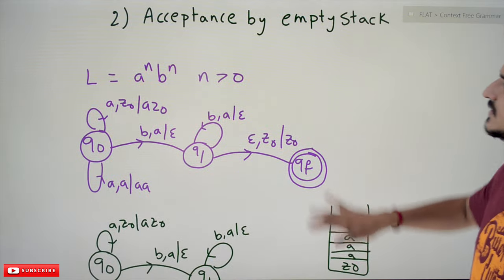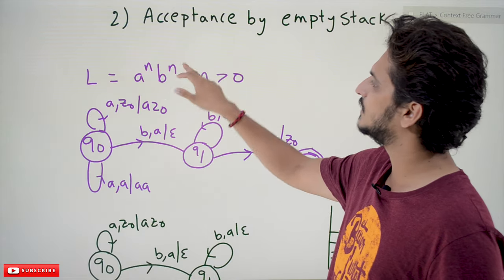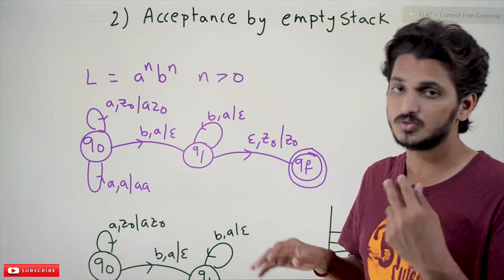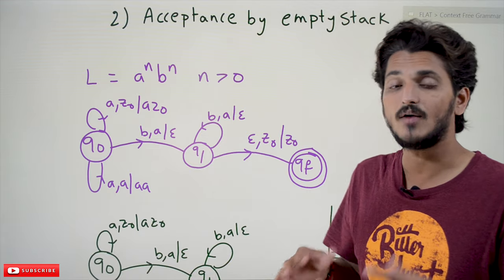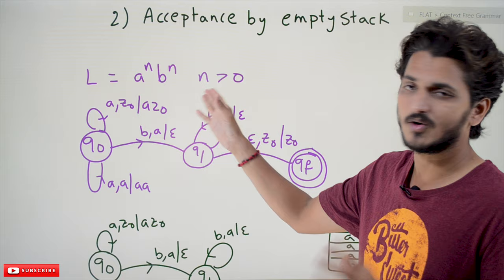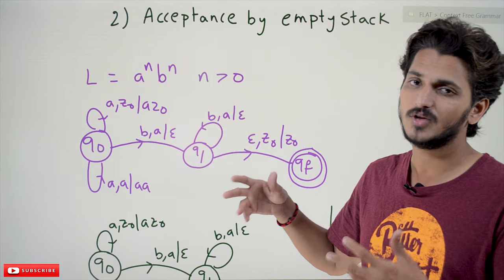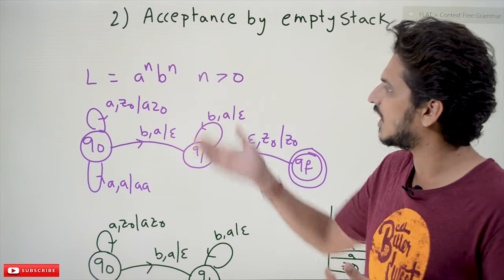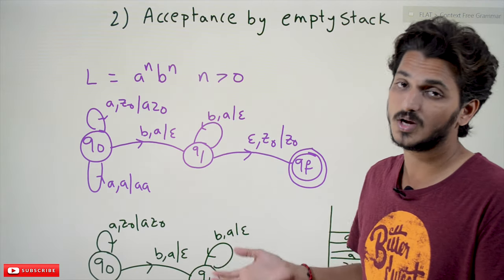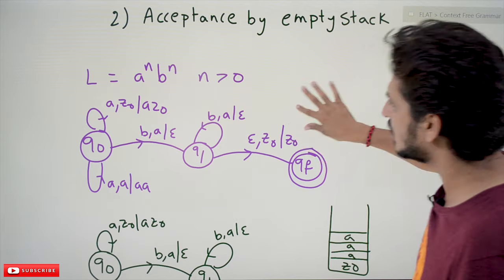Now we will check both examples. Take the language L = a^n b^n, where n is greater than 0. This is the example we have been using from the last two classes. Our assumption is that you already know the logic of how we constructed this pushdown automata, so we won't explain it in full detail again.